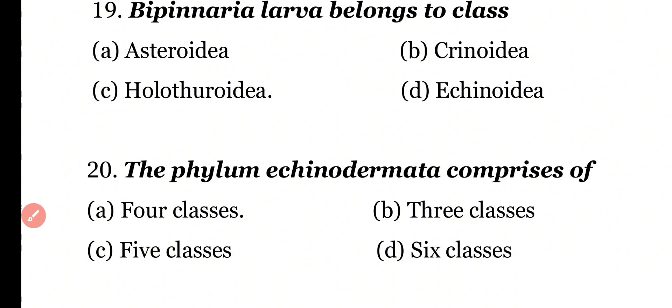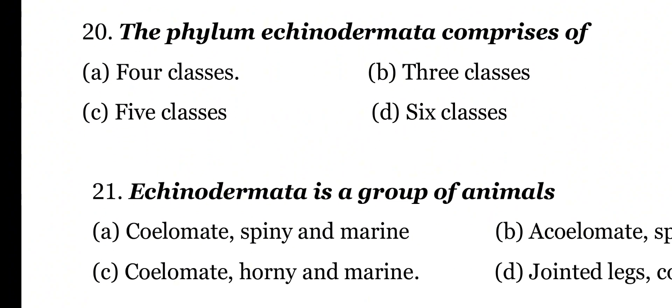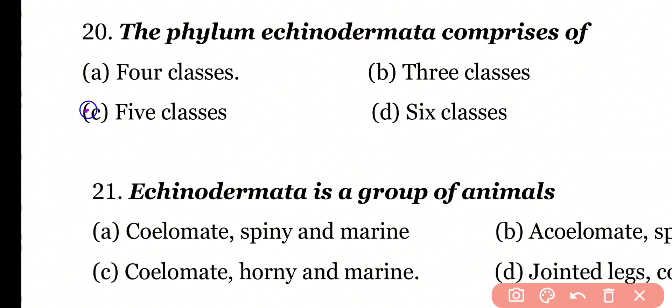Question 20: The phylum Echinodermata comprises of four classes, three classes, five classes, or six classes? Correct answer is Option C. The living classes of Echinoderms are five: Asteroidia, Ophiuroidia, Echinoidia, Holothuroidea, and Crinoidia.